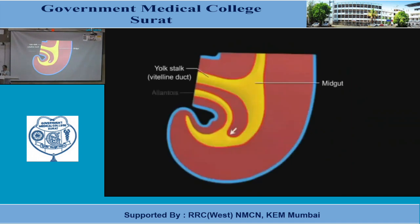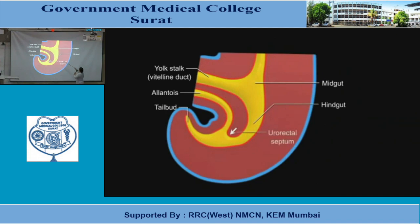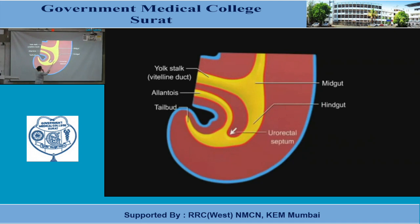Now for the hindgut. We have seen the midgut; after the midgut comes the hindgut. This part is the hindgut. In the hindgut, from the ventral aspect is the allantois — as I showed in the earlier diagram. In between the allantois and the hindgut, a septum develops. It is called the urorectal septum — why urorectal? Because the allantois is going to form the urinary system and this hindgut is going to form the rectum.